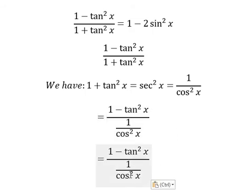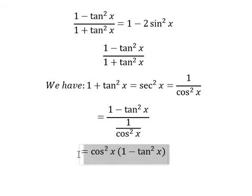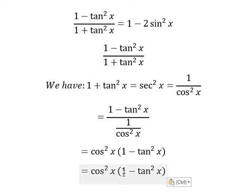Next, cosine squared x will go to the numerator. Next, cosine squared x multiplied by one minus tan squared x.